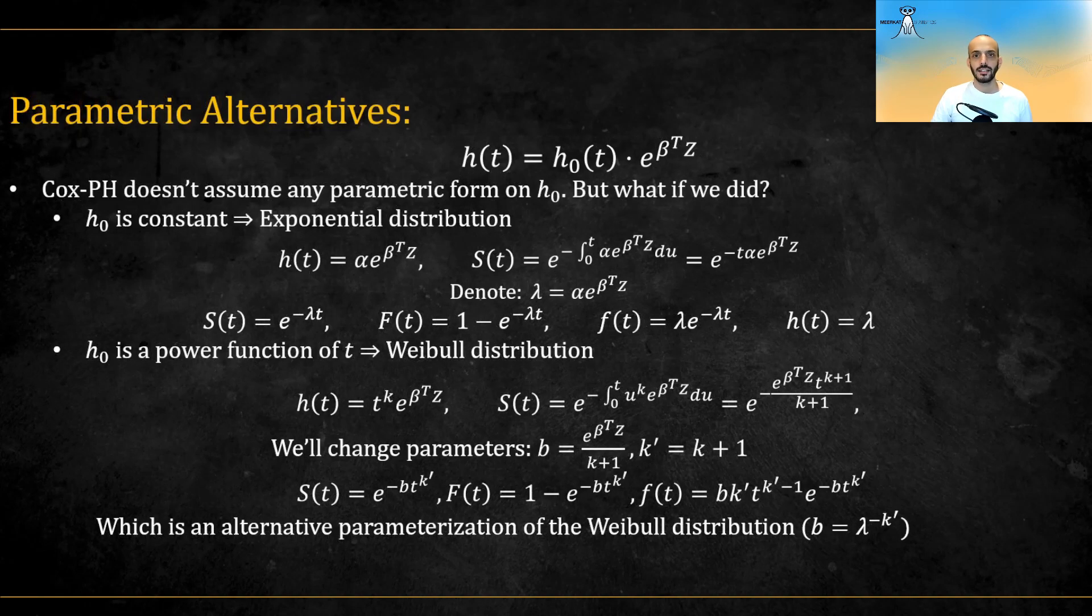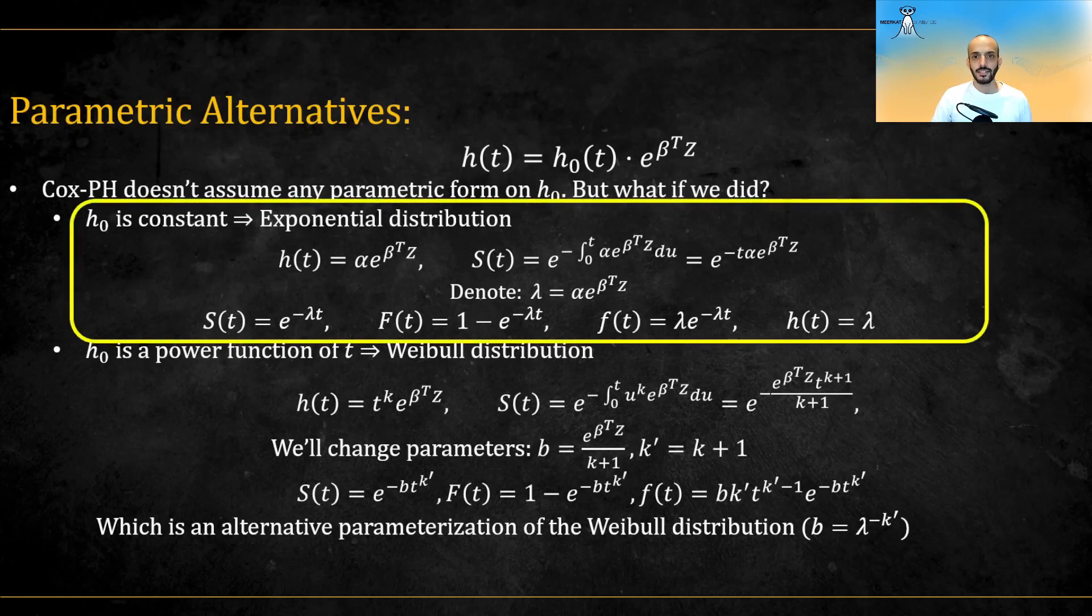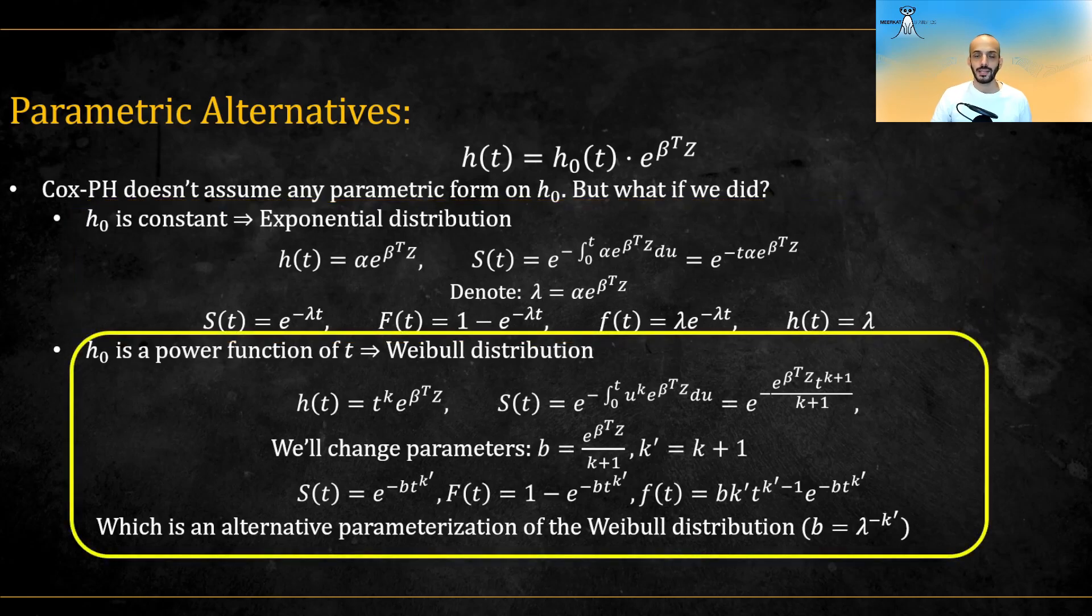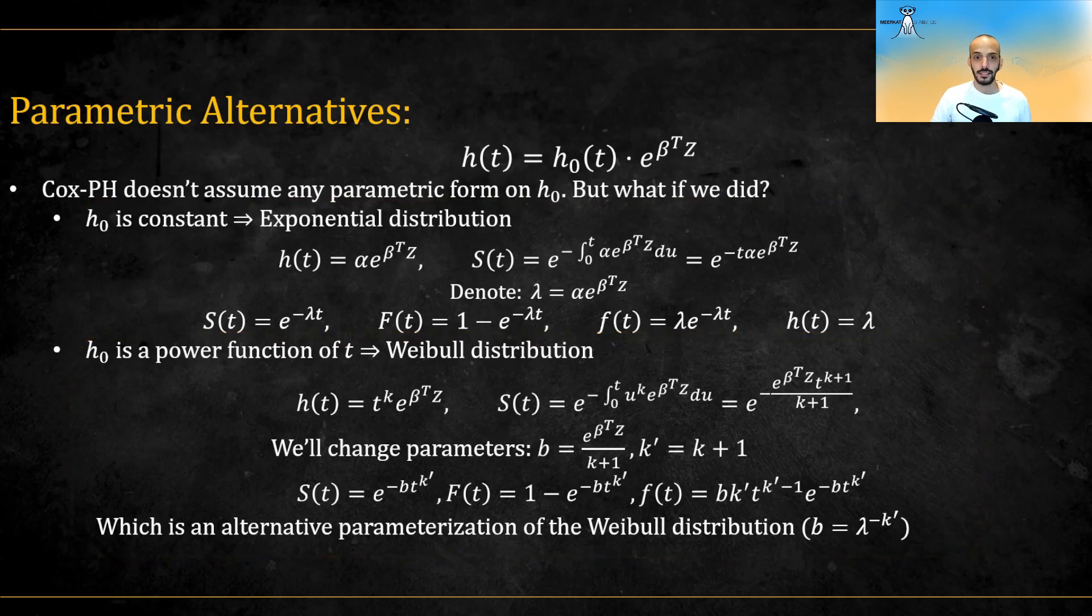Finally, Cox's proportional hazard models don't assume any parametric form on H0, but what happens if we do? Well, if we assume that H0 is constant, we get the exponential distribution, that is, an exponential regression. And if we assume that H0 is a power function, we get the Weibull distribution, or Weibull regression. You can pause the video and have a closer look at the mathematical details.